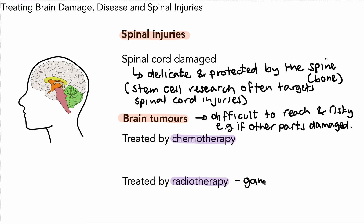We can also have treatment by radiotherapy. This is when we use gamma rays to target tumour cells. If we concentrate the gamma radiation on tumour cells, there's a good chance we can reduce the tumour and possibly cure a patient that may have a brain tumour.